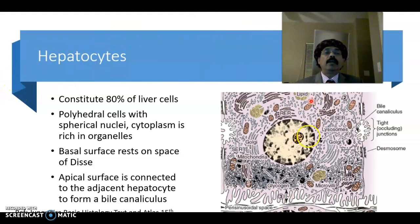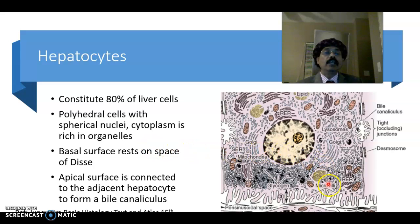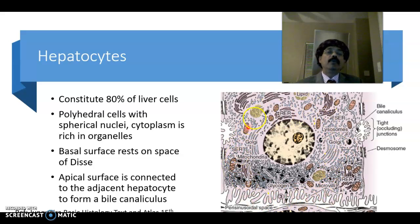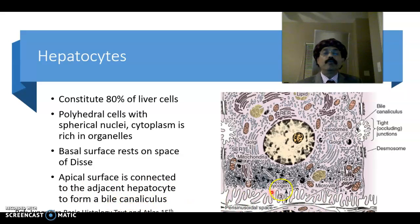The hepatocyte constitutes 80% of liver cells. It is a polyhedral cell with spherical nuclei. The cytoplasm is rich in organelles — a lot of mitochondria, rough endoplasmic reticulum, Golgi apparatus, and lysosomes — because it is a highly active, highly metabolic cell. It may contain 2,000 to 4,000 mitochondria. The basal surface rests on the space of Disse, and the apical surface connects to adjacent hepatocytes to form the bile canaliculus.